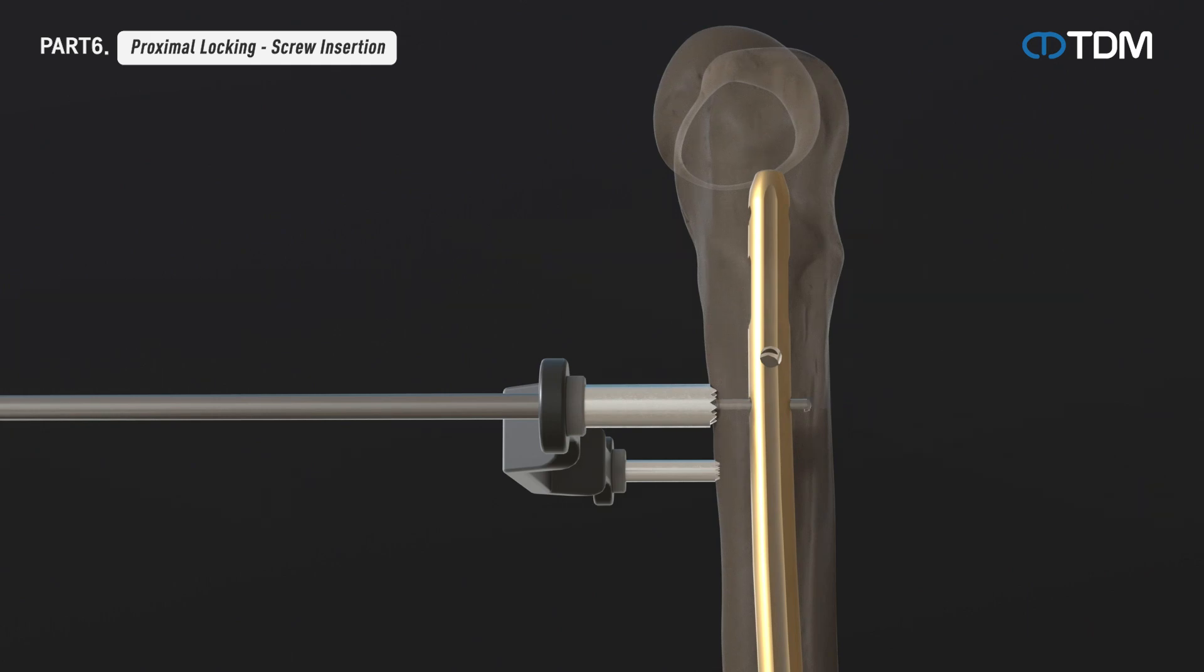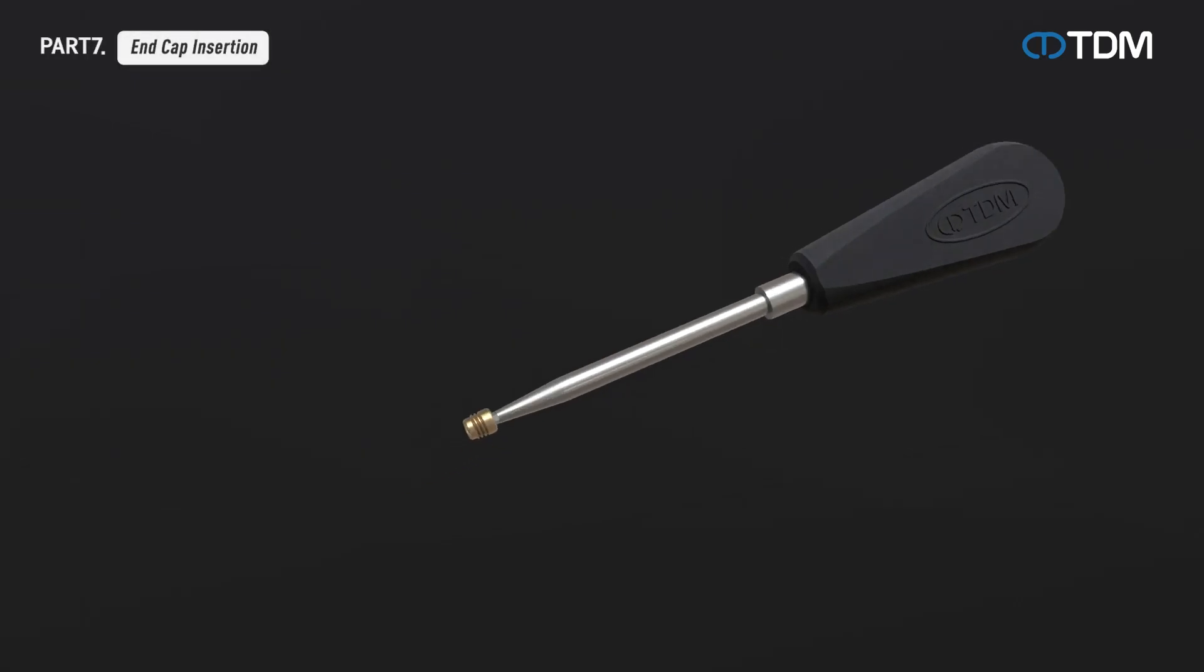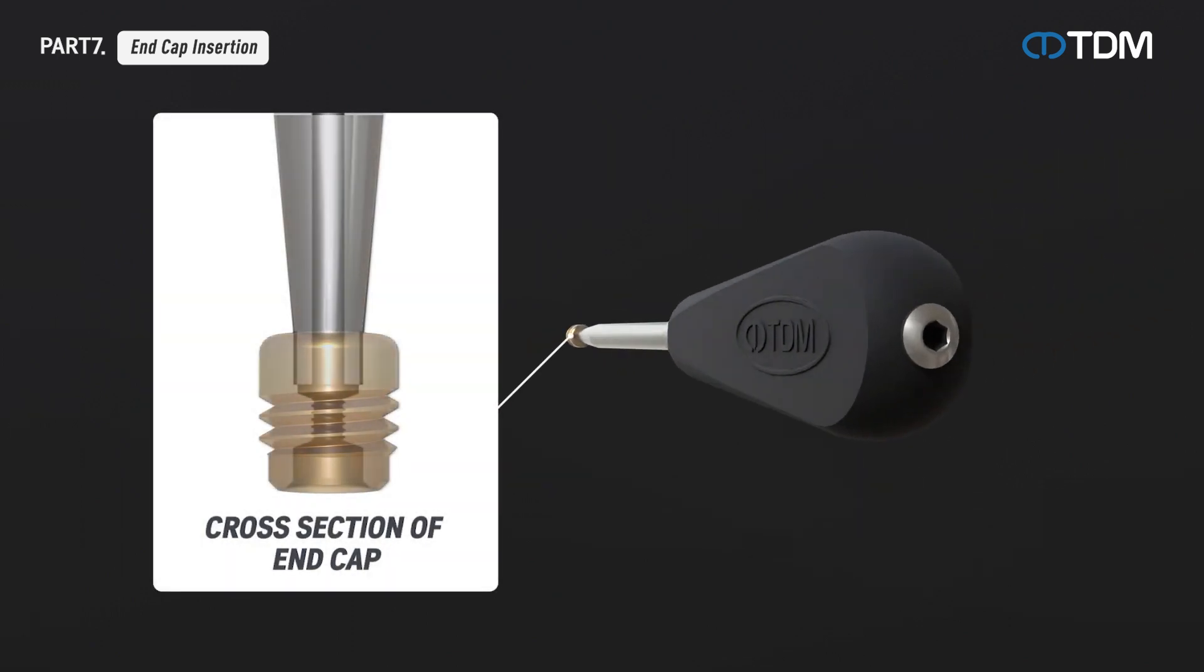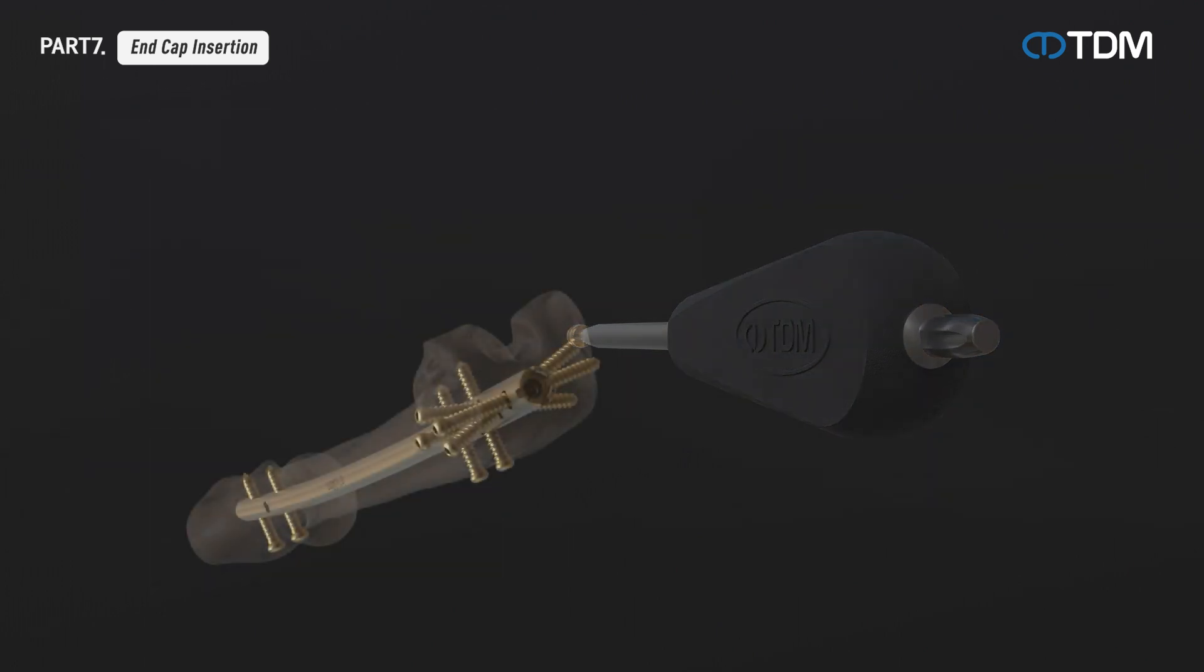Attach the selected end cap to the end cap driver and rotate the coupling screw inserted into the driver to fasten the end cap to the driver. Insert the fixed end cap into the top of the nail to tighten. When the end cap is secured on the nail, release the coupling screw and remove it from the driver to complete the procedure.